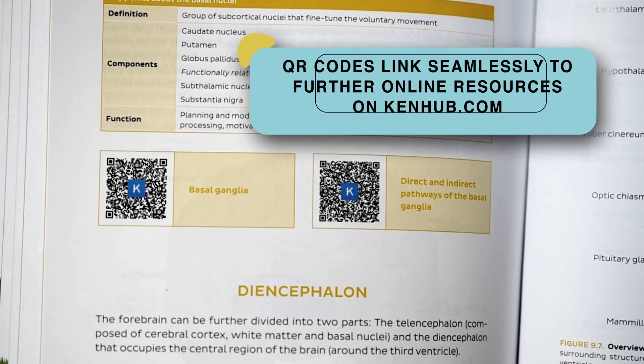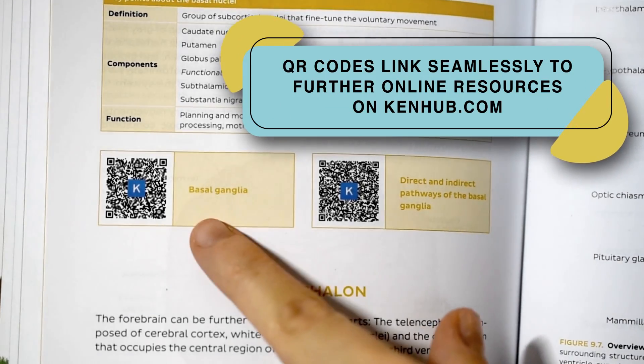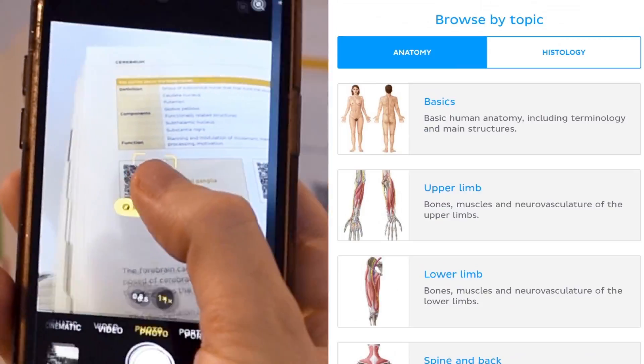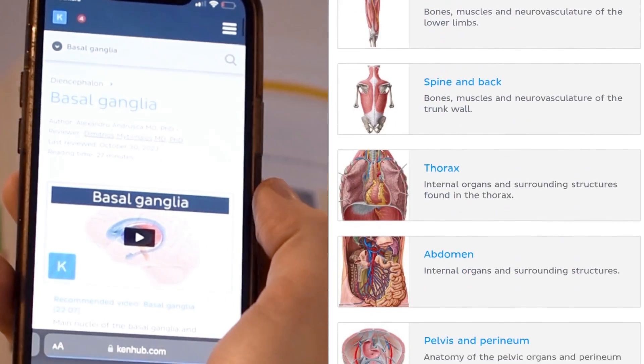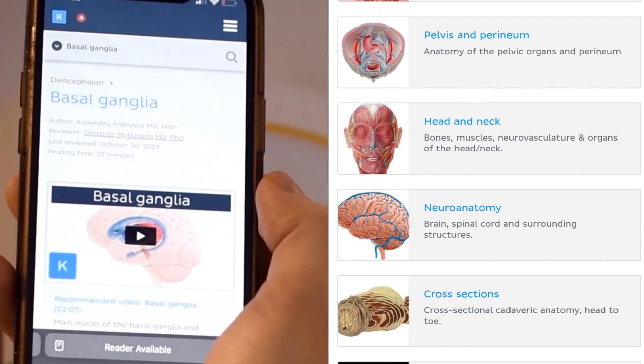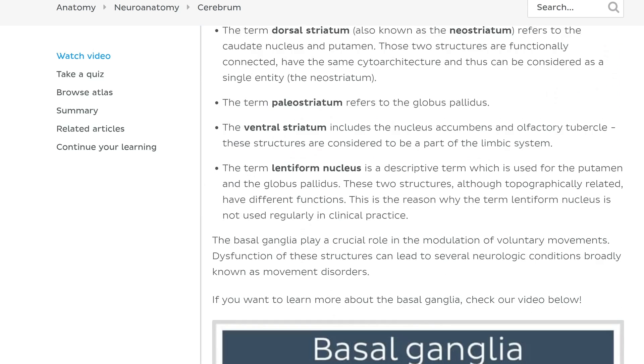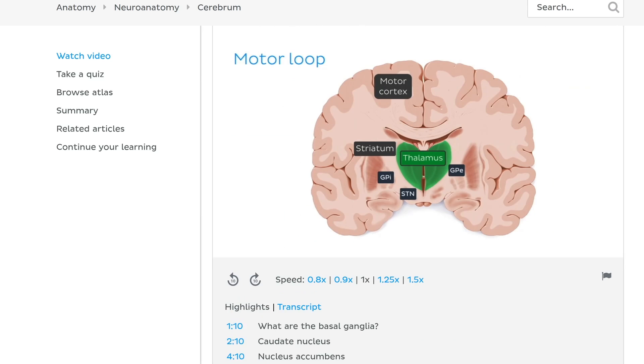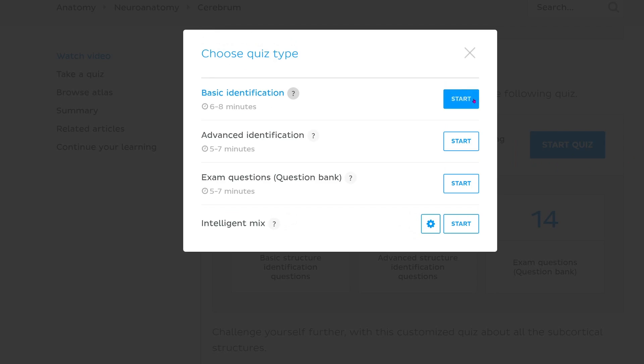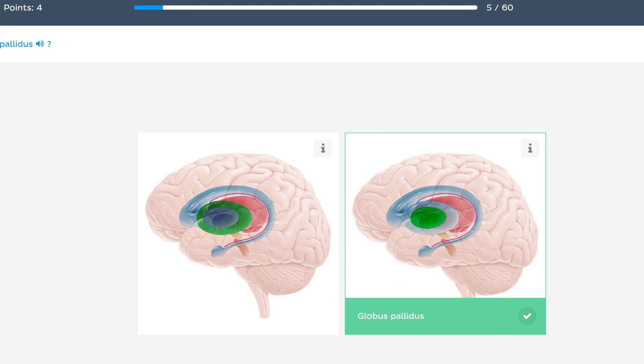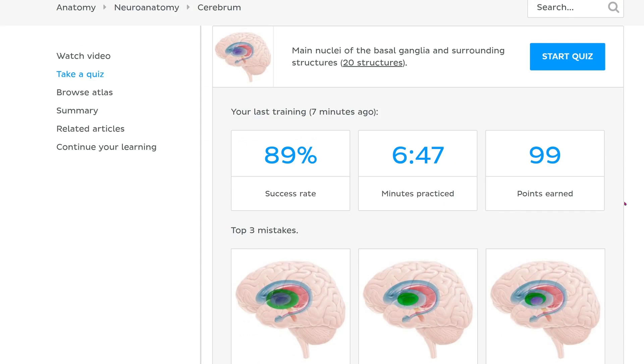For an even more comprehensive overview of anatomy, the book features QR codes at the end of each section, seamlessly linking to extensive online resources on Kenhub.com to further enhance your learning. Online resources include further illustrations, videos with engaging animations, and quizzes to test your knowledge, providing a complete, well-rounded study package.